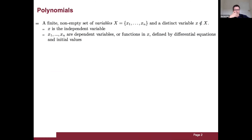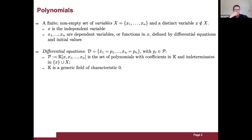We assume a finite non-empty set of variables x1 through xn and a distinct independent variable x, whereas x1 through xn are dependent variables — placeholders for functions in x. They are defined by differential equations and initial values. Differential equations associate to every x1 through xn a derivative that is a polynomial pi, with an n-tuple of elements of the generic field as the initial condition.